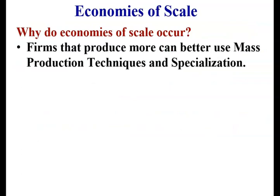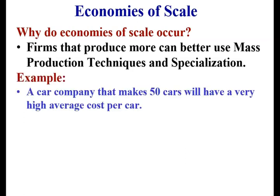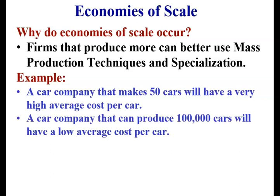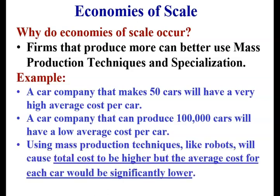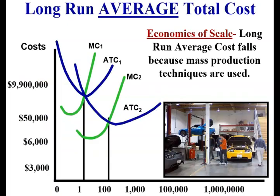Why do economies of scale occur? Firms that produce more can better use mass production techniques and specialization. A car company that makes 50 cars will have a very high average per unit cost, but a car company that produces 100,000 cars will have a low average cost per car. Using mass production techniques like robots will cause total cost to be higher, but the average cost for each car will be significantly lower. The long run average total cost falls because mass production techniques are used.